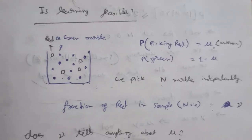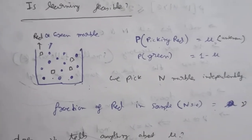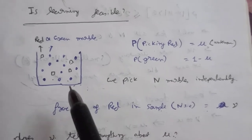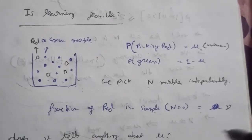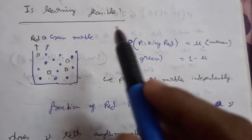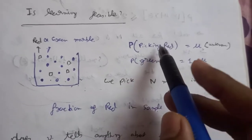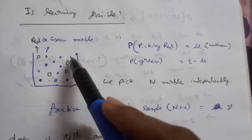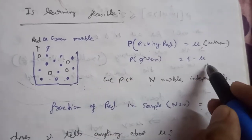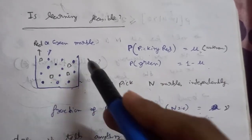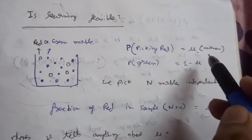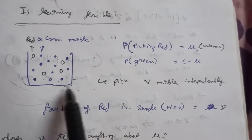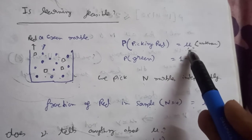Welcome to another lecture of our machine learning playlist. Today we are going to try and answer a question: is learning feasible? So for that we have a bucket here. Suppose the bucket is full of red and green marbles. We need to find what is the probability of picking a red marble and what is the probability of picking a green marble. Suppose the probability of picking a red marble is mu and picking a green marble is 1 minus mu. We actually do not know what is the fraction of red and green marbles here.